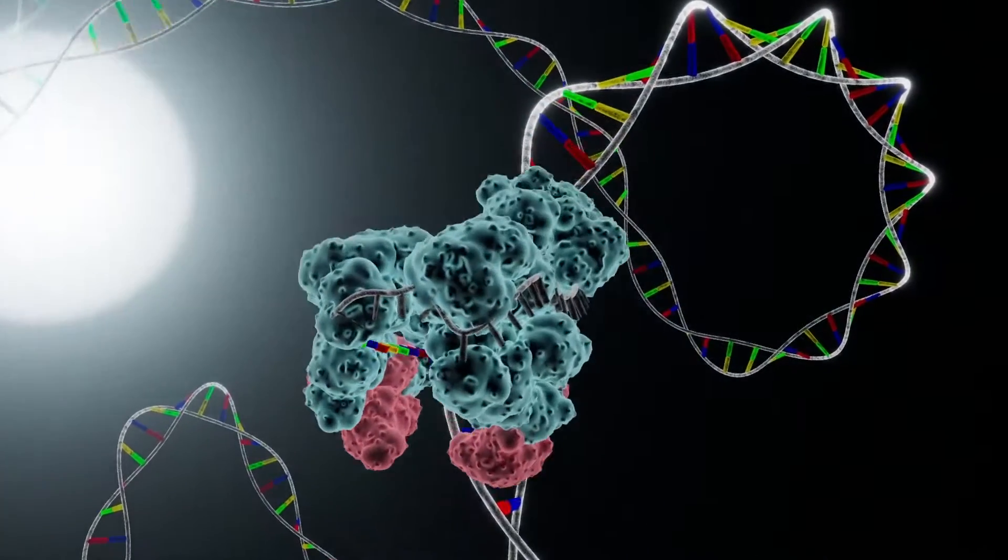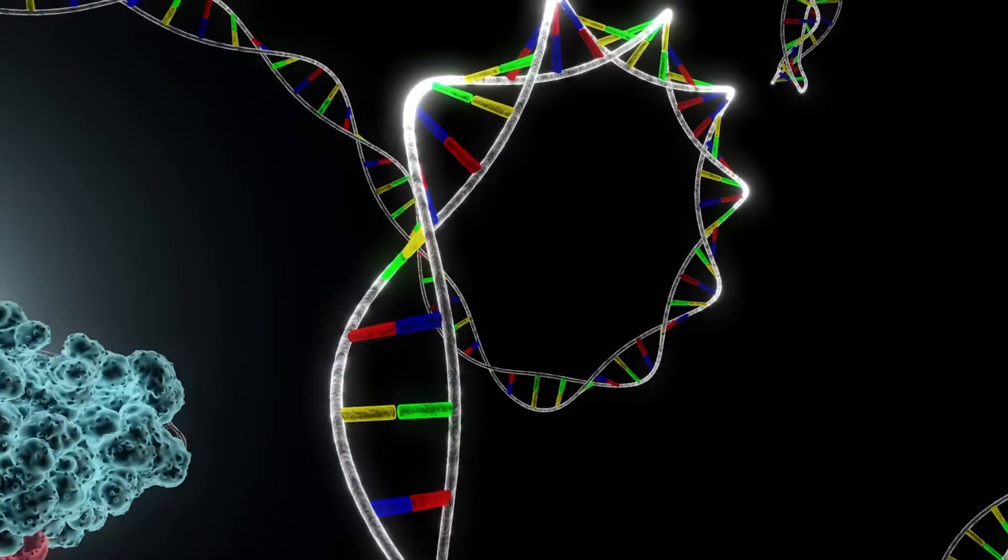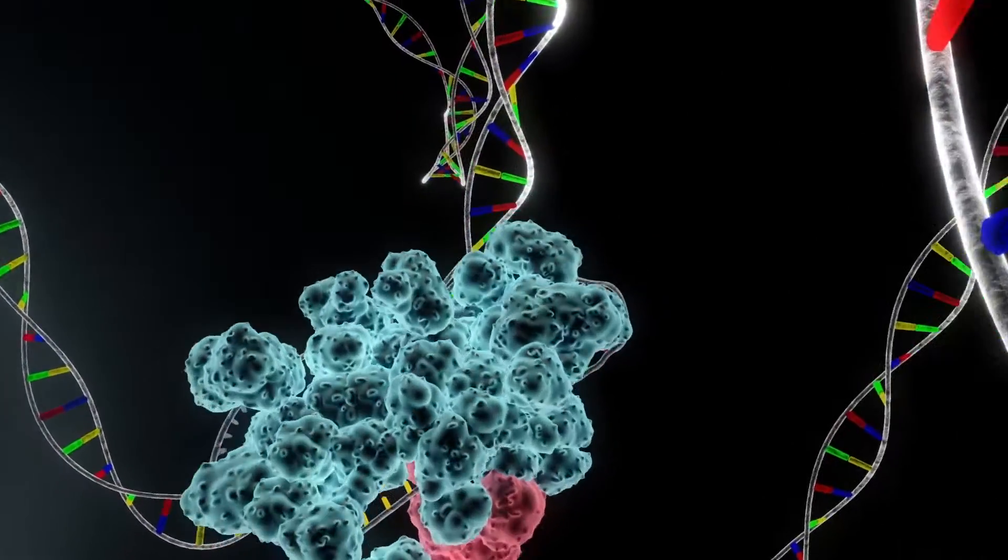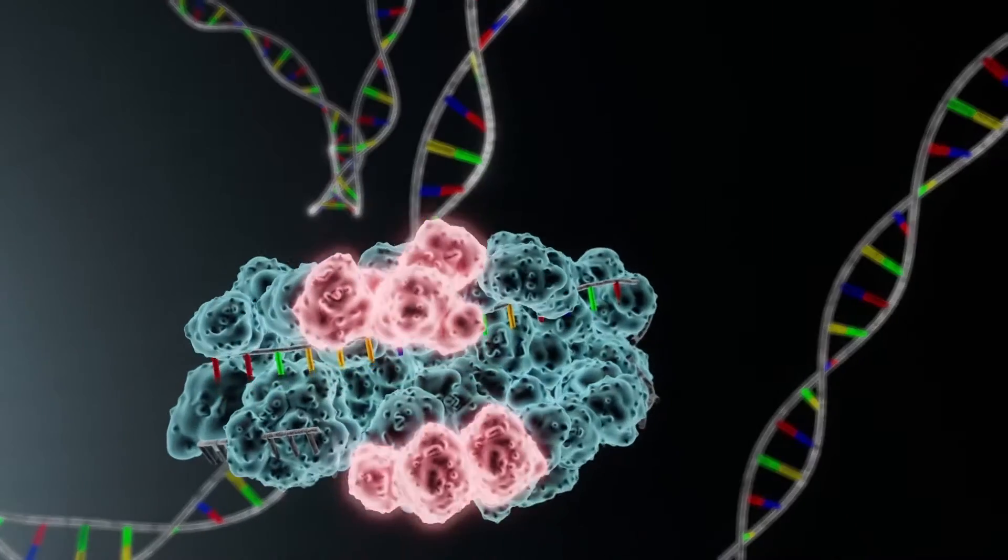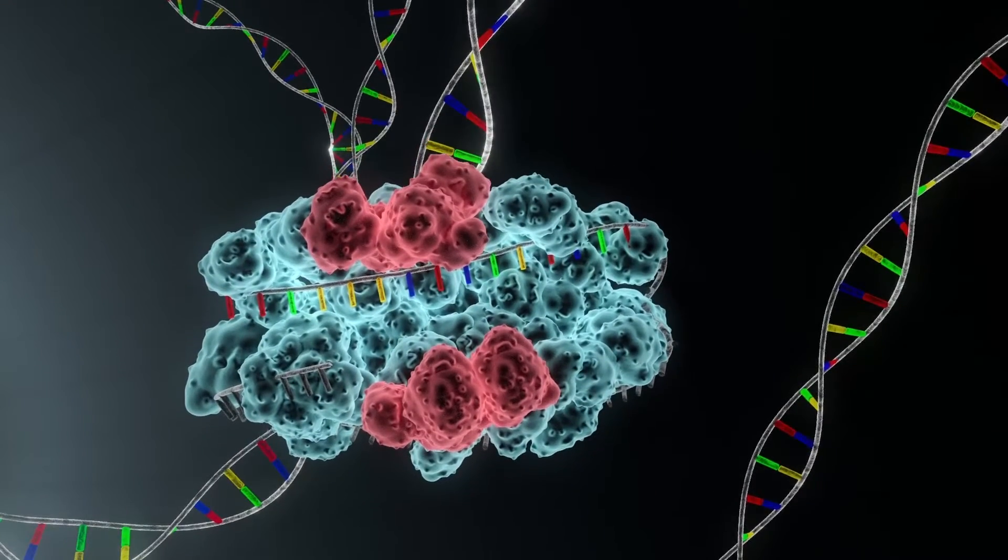CRISPR-Cas9 is a powerful and precise gene editing technology that can add, remove, or alter specific sections of DNA. CRISPR comes equipped with a protein called Cas9 which acts as a pair of molecular scissors to cut DNA.